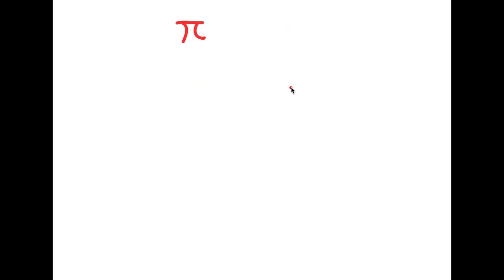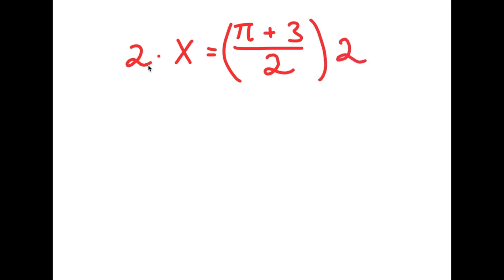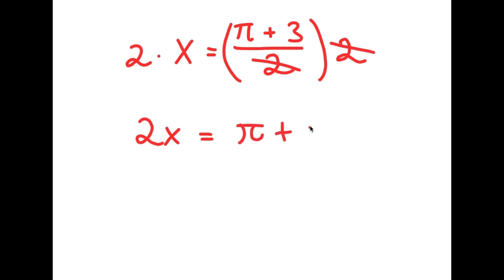I'm first going to start with the statement x equals pi plus 3 over 2. All I'm doing is giving a value to a variable, which is completely legal. Now I'm going to multiply both sides by 2: 2 times x equals pi plus 3 over 2 times 2. The twos cancel on the right, so I get 2x equals pi plus 3.